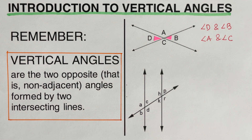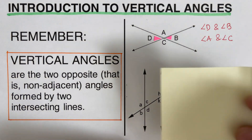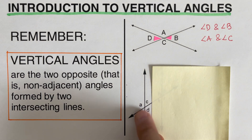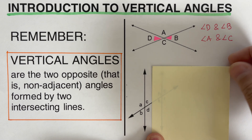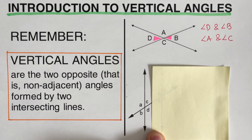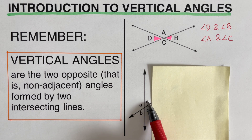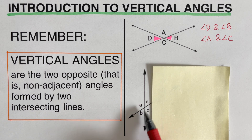Now let's move on to the next example. As you can see, there are more angles involved here. The trick is to cover some parts so we're not distracted by all the angles. Focusing on this first part, we can say angle A and angle D are vertical because they're across from each other, and angle B and angle C are also vertical.